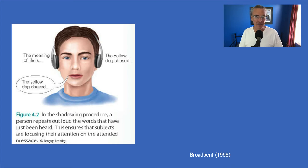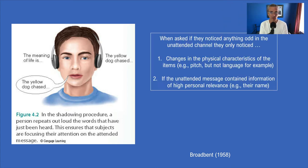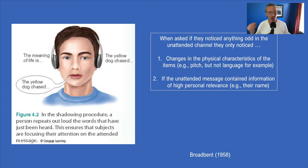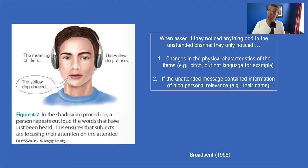When Broadbent asked people afterward what they noticed in the unattended message — while he was changing things in that channel — participants would not notice things like language changes, for example words switching from English to French and back. They only noticed if one of two things happened: pitch changes, such as if the message originally read by a male voice was taken over by a female voice.